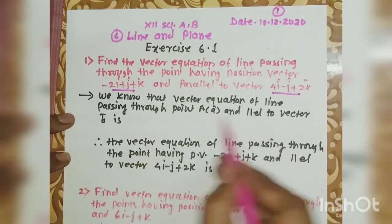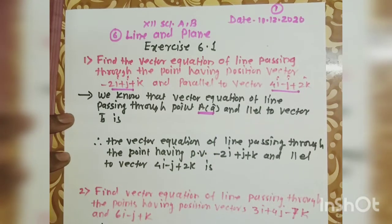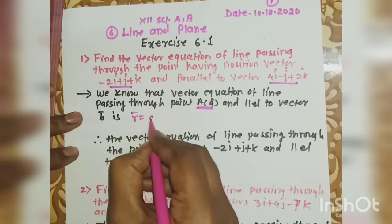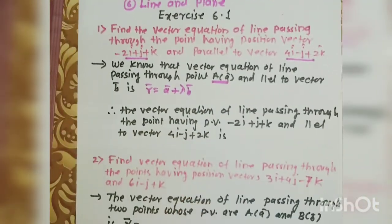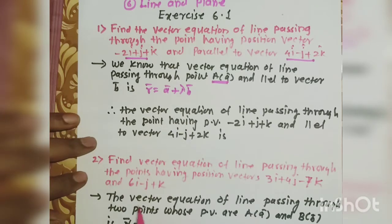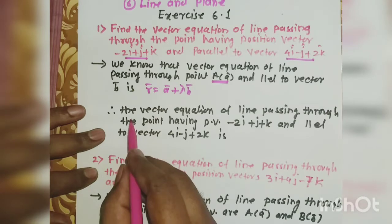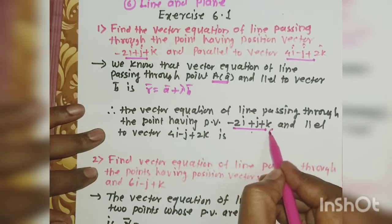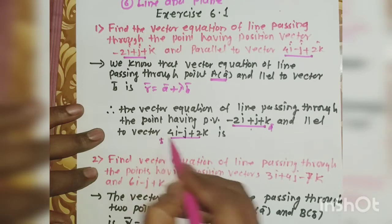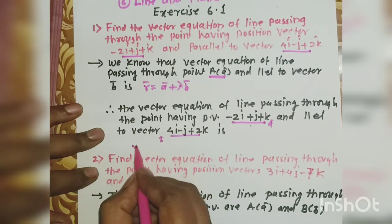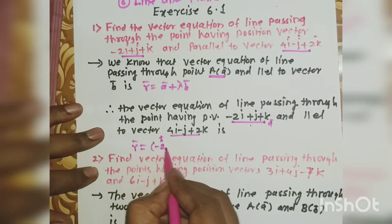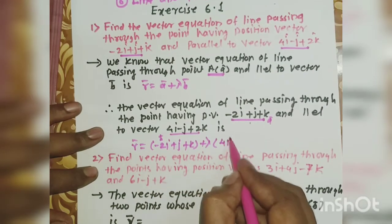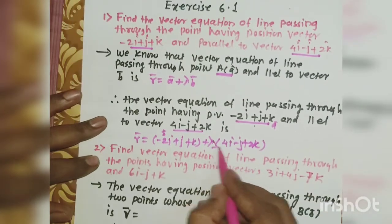We know that the vector equation of a line passing through position vector ā and parallel to vector b̄ is r̄ = ā + λb̄. So the equation of the line passing through the point having position vector ā = 2i plus j plus k and parallel to 4i minus j plus 2k is: r̄ = (2i + j + k) + λ(4i − j + 2k), where λ is a scalar. This is the answer.